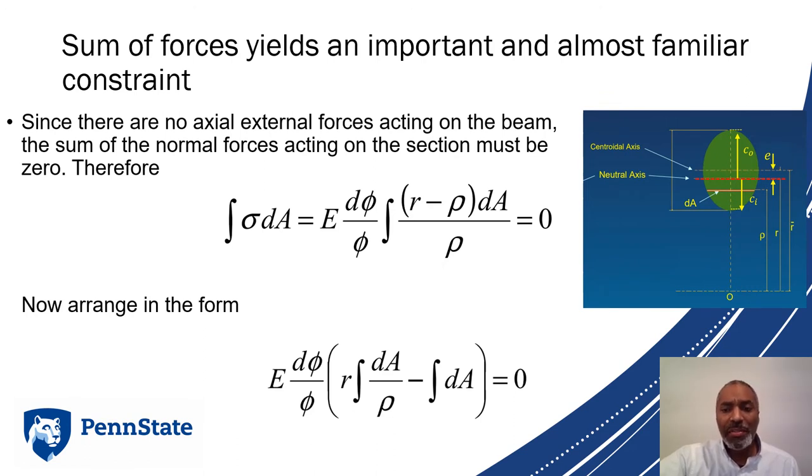Next, the sum of forces yields an important and almost familiar constraint. Since there are no axial external forces acting on the beam, the sum of the normal forces acting on the section must be zero. If nothing's acting in the direction of the beam, all we have is the stress on our internal faces, and since they're all internal, they have to sum to zero. So we integrate the stress over the area.